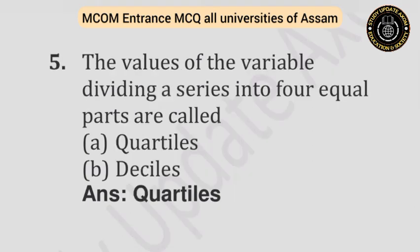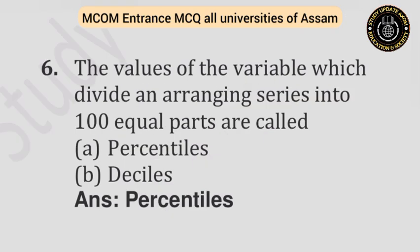Question number five: The values of the variable dividing a series into four equal parts are called — Option A: Quartiles. Option B: Deciles. Answer is quartiles. Question number six: The values of the variable which divide an arranged series into hundred equal parts are called — Option A: Percentiles. Option B: Deciles. Answer is percentiles.